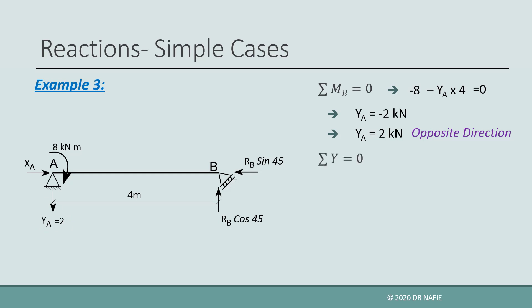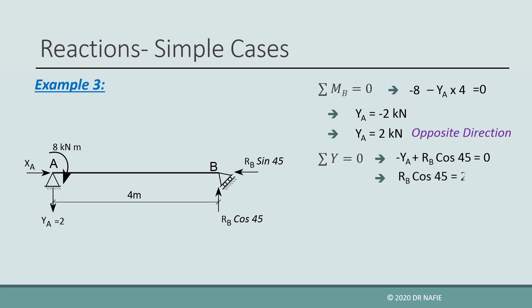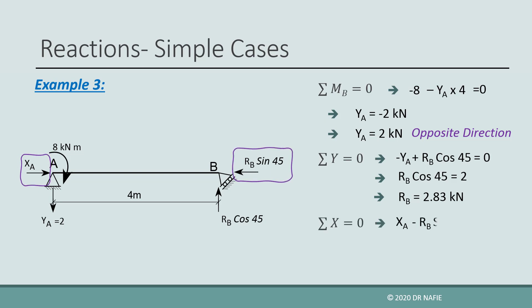Next, we apply sigma y equals zero. The equation has only one unknown, RB. Solving gives RB equal to 2.83 kN. Finally, we use the third equation, sigma x equals zero. Solving gives XA equal to 2 kN.